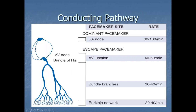The reason we're discussing the conducting pathway is that the normal pacemaker in the heart is the SA node — the sinoatrial node. In an adult, it accounts for a normal heart rate between 60 and 100. There are times, however, when the conducting pathway emanating from the SA node gets interrupted.